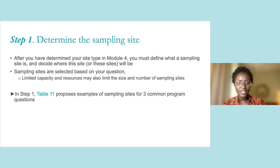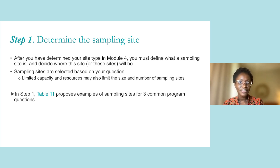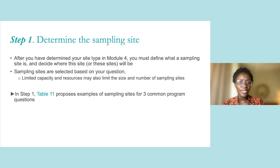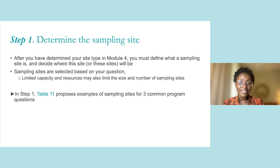Before you start this process, you need to have already determined the site type that is appropriate for your priority program question. Remember that Module 4 describes the different site types. For Step 1, you must define what a sampling site is and decide where the site or sites will be. The location of each sampling site should be relevant to your priority program question. To help, Table 11 lists a few examples of sampling sites based on different program questions.